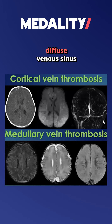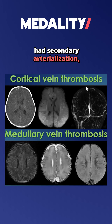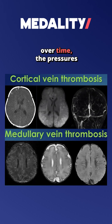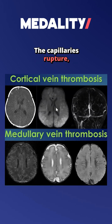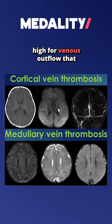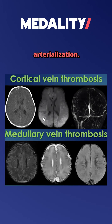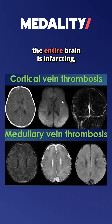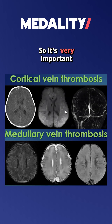So basically there was diffuse venous sinus thrombosis, and then you had secondary arterialization because if you get impaired venous outflow over time, the pressures build up and you get little petechial hemorrhages. The capillaries rupture and the pressures get so high for venous outflow that you start to get secondary arterialization. There's no large artery distribution because the entire brain is infarcting from the longstanding venous thrombosis. So very important to remember this diagnosis.